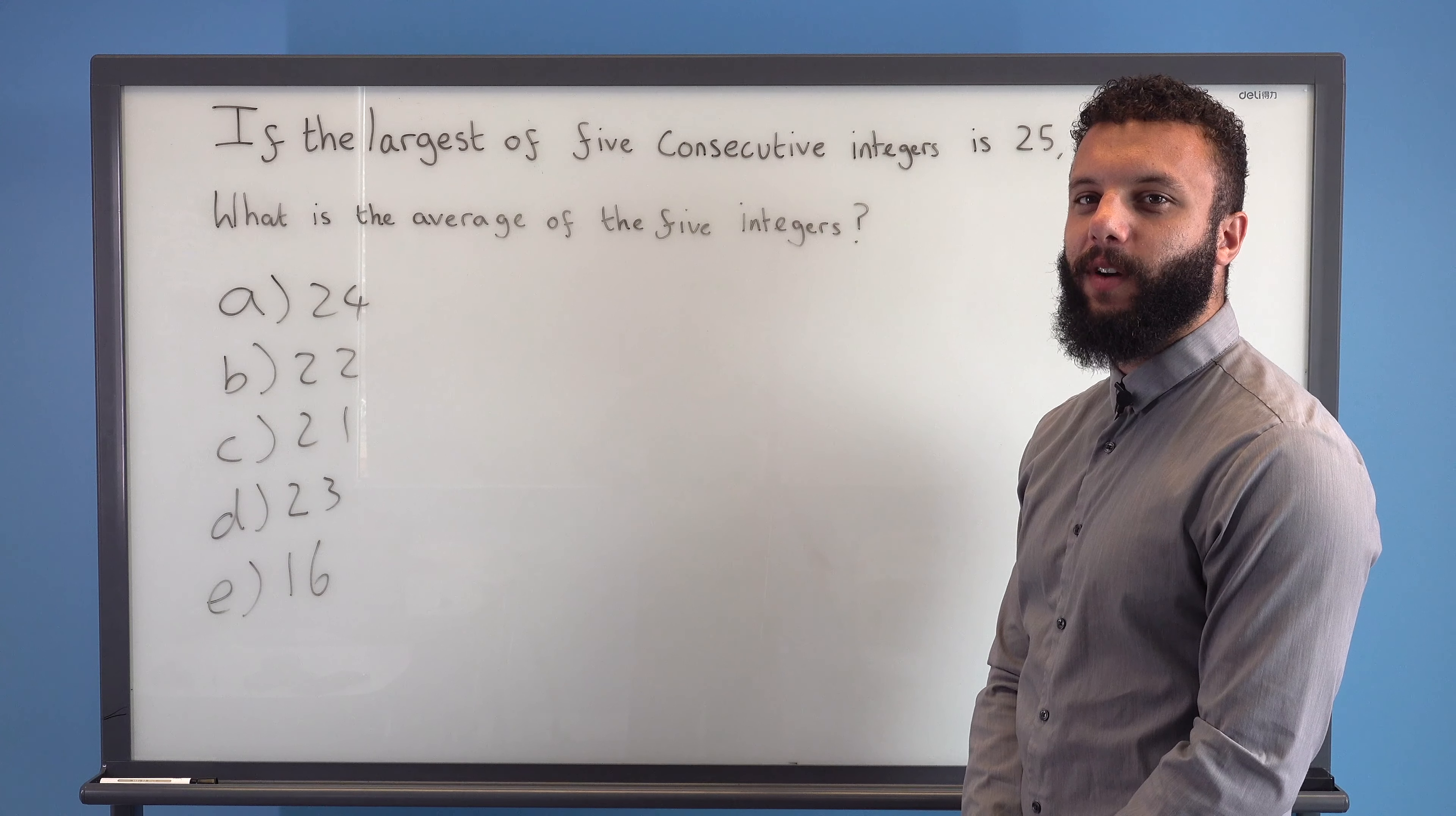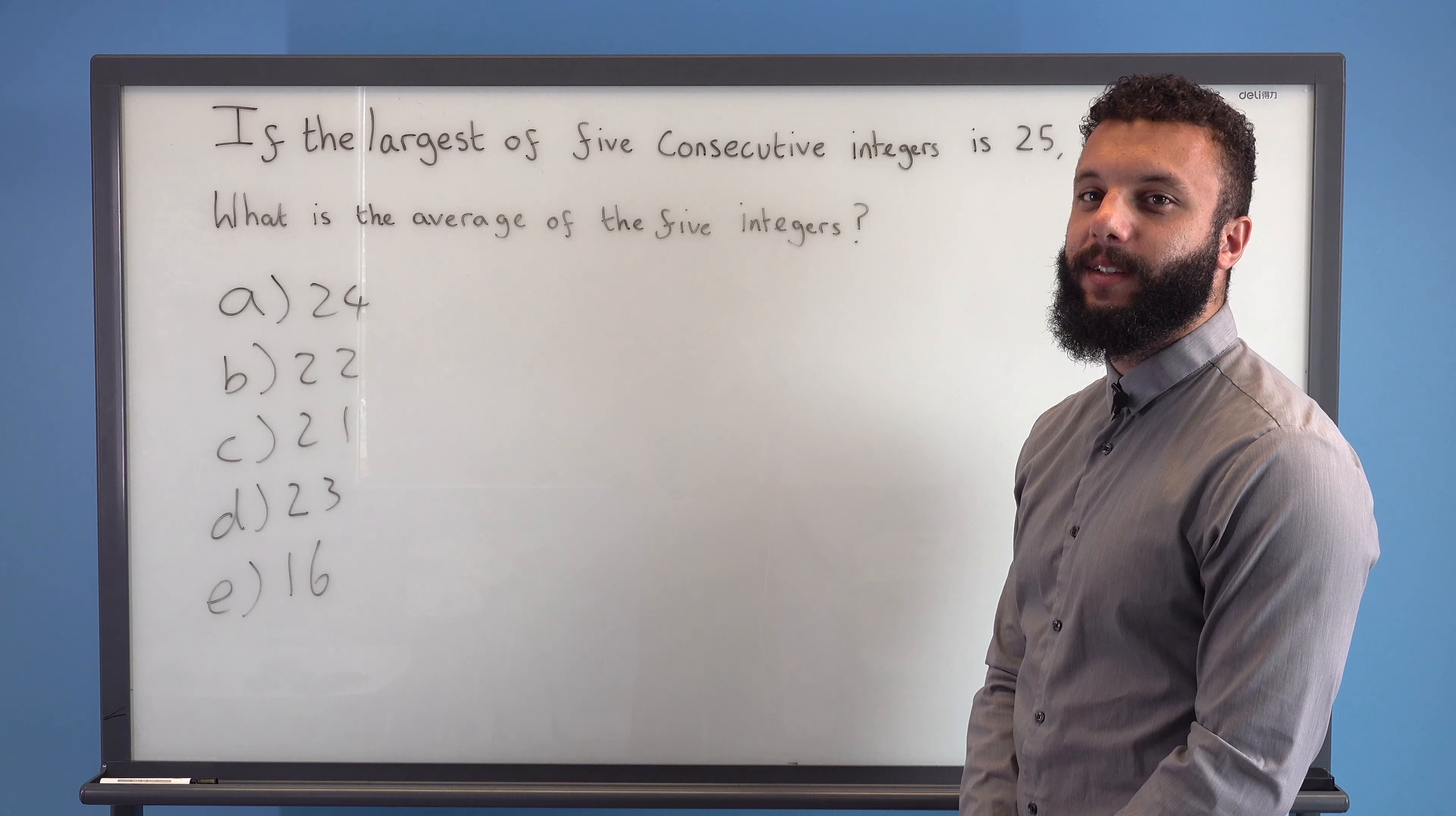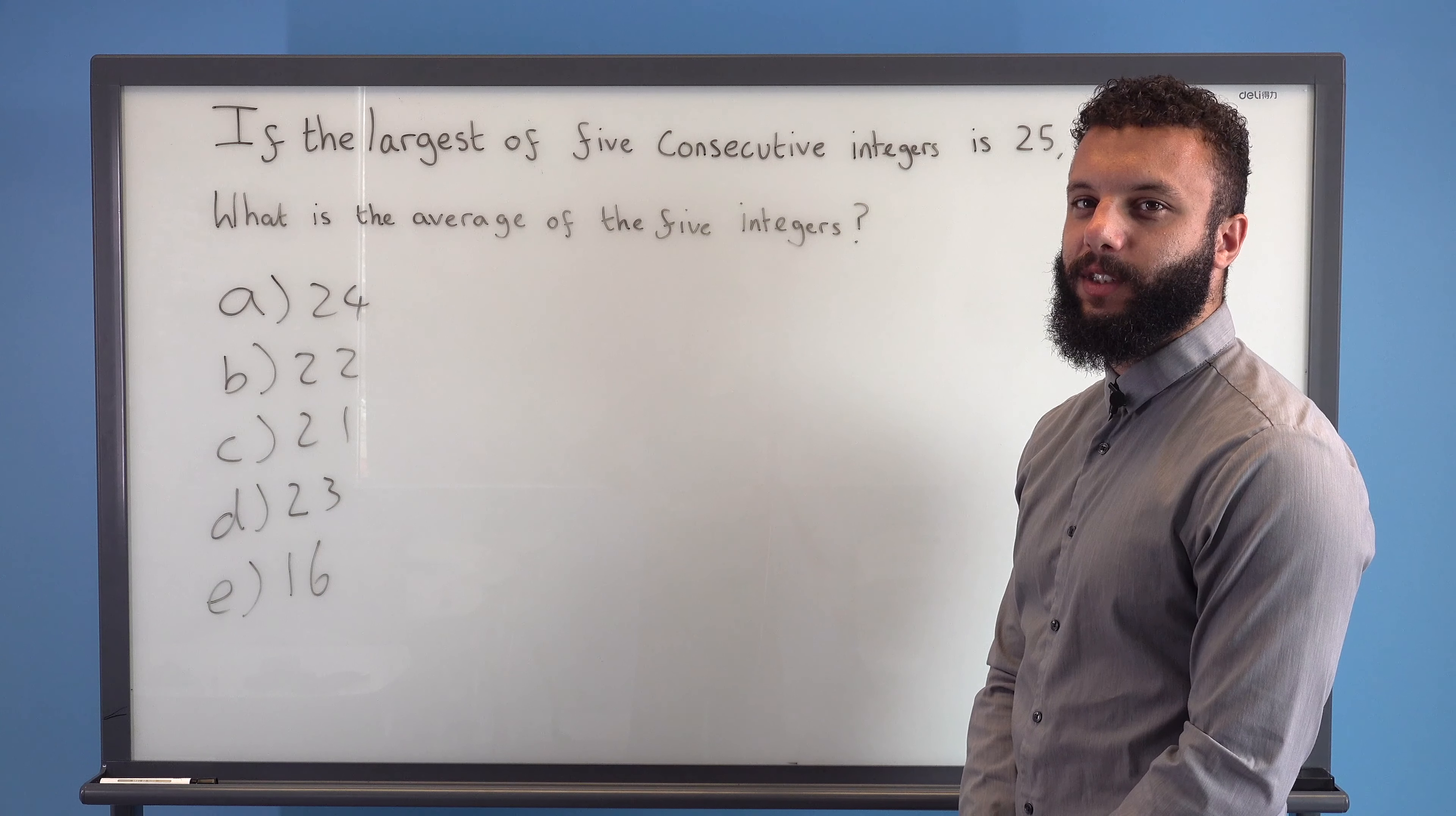The question asks us to find the average of five numbers given that the numbers are all consecutive, they are integers, and the largest is 25.